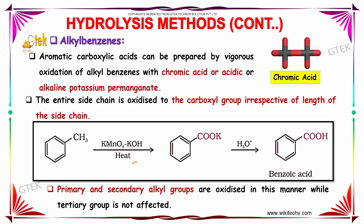Aromatic carboxylic acids can be prepared by vigorous oxidation of alkyl benzenes with chromic acid or alkaline potassium permanganate. The entire side chain is oxidized to the carboxylic group irrespective of the length of the side chain. Primary and secondary alkyl groups are oxidized in this manner, while the tertiary group cannot be oxidized because of the absence of a benzylic hydrogen. This intermediate, when treated with H3O+, yields benzoic acid because the H+ ion replaces the K+ ion.